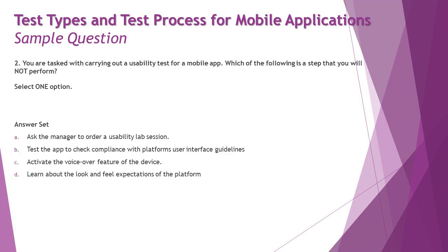Moving to question number two: you are tasked with carrying out a usability test for a mobile application — which of the following is a step you will NOT perform? These are very tricky options when they use words like 'not,' 'true,' 'false,' 'best,' or 'most.' Make sure you keep a special eye on such words, because during the examination when you're tense you may ignore them before picking the right answer. They're asking you for the option which does NOT relate to usability.